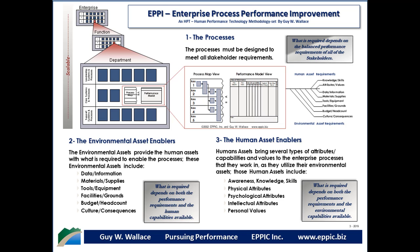What is required depends on both the performance requirements and the human capabilities that are available. The third thing we look at are the human assets that enable the process performance given the environmental assets. Human assets bring several types of attributes and capabilities and values to the enterprise processes. There are awareness, knowledge, and skills, physical, psychological, and intellectual attributes, and personal values. What is required depends on both the performance requirements and the environmental capabilities available.